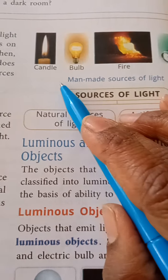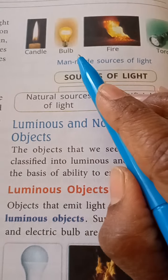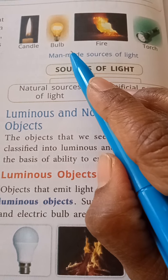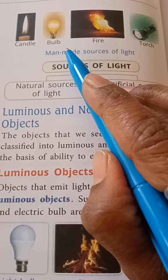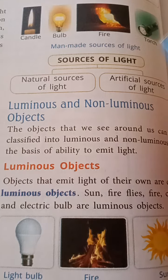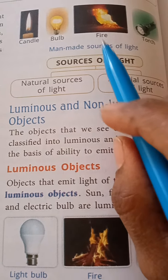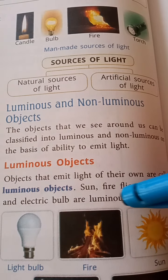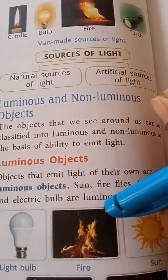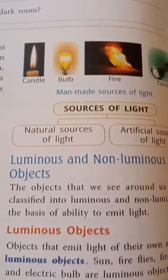Candle is also man-made. Bulb is an electrical device, and electric light is the most important form of artificial light. You know that at our home also we use the bulb, tube light, and different electrical things.